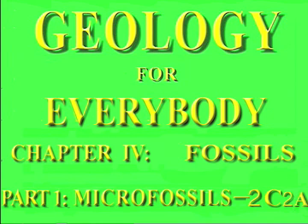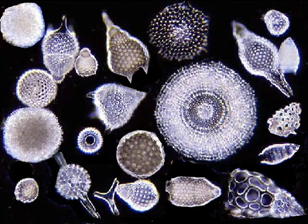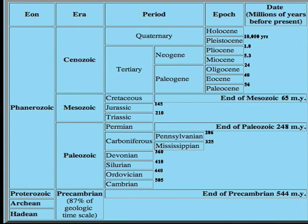Welcome to Part 2C2A, the last of the series of shows about microfossils. This one is about radiolarians. These animal-like protists are found first in strata of Early Cambrian age and so provide biostratigraphic, climatic, and oceanographic information throughout the remainder of the Phanerozoic Eon.